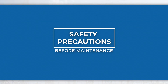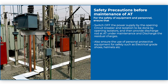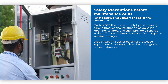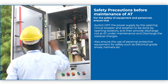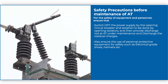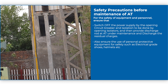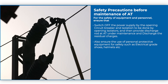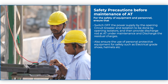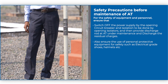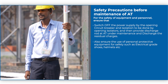For the safety of equipment and personnel, ensure that the power supply is switched off by opening the circuit breaker, isolation to be done by opening isolators, then provide a discharge rod at the equipment under maintenance and discharge the residual charges. Also ensure the use of personal protective equipment such as electrical grade shoes, helmets, etc.